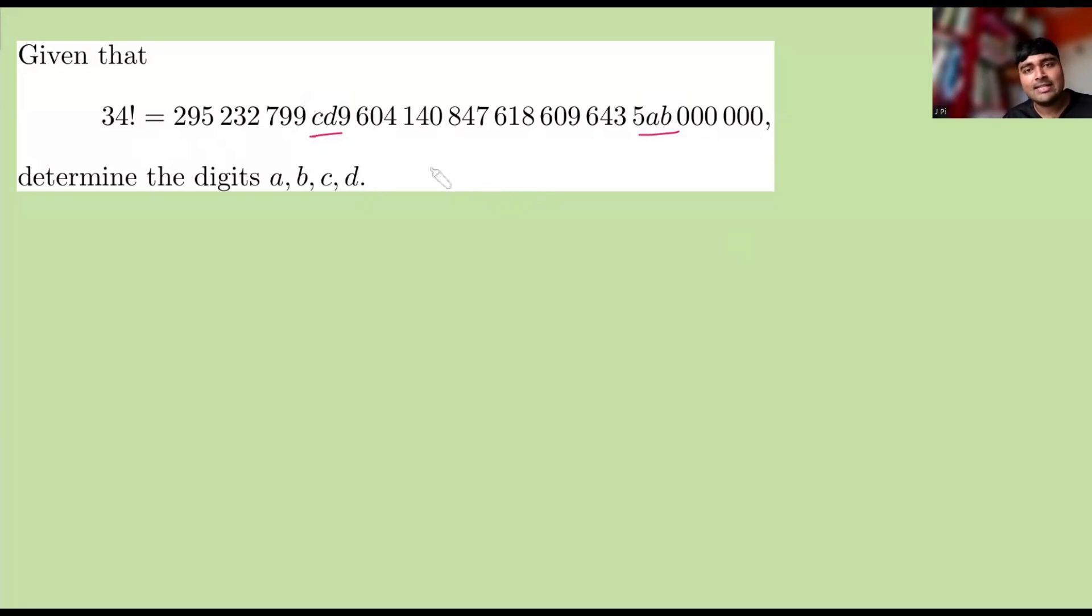There's a bunch of ways you can approach this. I'm going to start by considering this digit b here. Now, the one thing I know about factorials, or certainly large numbers factorial, is that they're going to end in a bunch of zeros. So you can see we've got at least six zeros here, but potentially it ends in some more zeros as well.